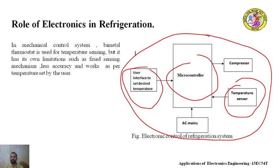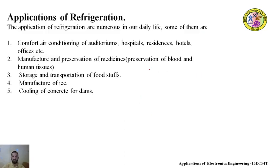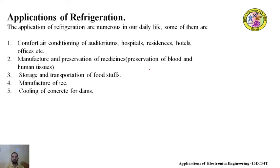By using this electronic system, we can make refrigeration work smartly — it can change the temperature according to changes in the environment. Now we will see the applications of refrigeration. The refrigeration process can be used in the air conditioning of auditoriums, hospitals, residences, hotels, offices, etc. These refrigeration systems can also be used to preserve medicines, blood, and human tissues. Refrigeration can be used to store and transport foodstuffs, for manufacturing of ice, and for cooling of concrete for dams. These are a few applications of refrigeration.